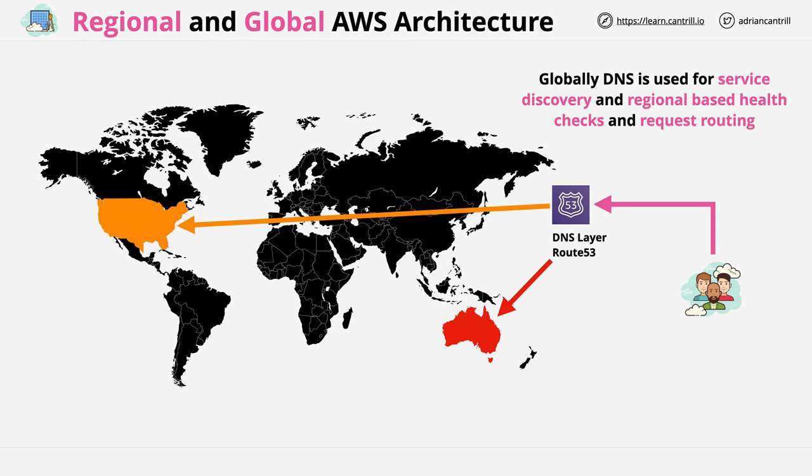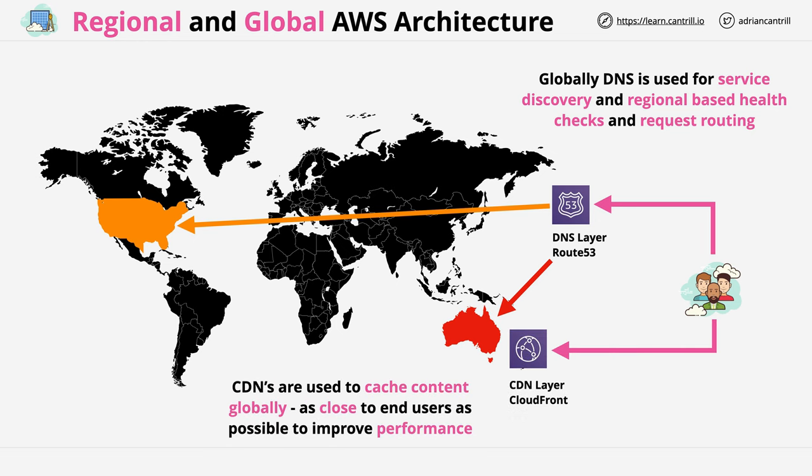Regardless of where infrastructure is located, a content delivery network can be used at the global level. This ensures that content is cached locally as close to customers as possible, and these cache locations are located globally — they all pull content from the origin location as required. To pause here briefly: this is a global perspective. The function of the architecture at this level is to get customers through to a suitable infrastructure location, making sure any regional failures are isolated and sessions moved to alternative regions. It attempts to direct customers at a local region, and improve caching using a content delivery network such as CloudFront.